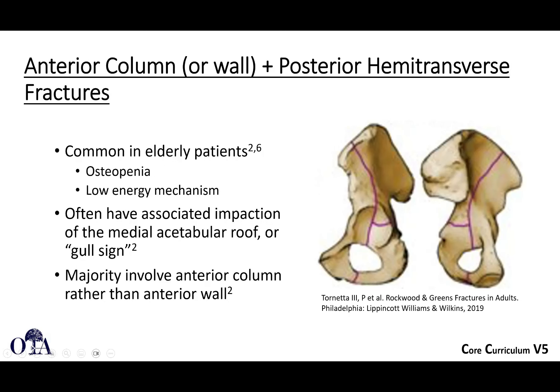Anterior column and posterior hemitransverse fractures are common in elderly patients. Frequently the anterior column fracture extends high, and then instead of a full transverse, you have the hemitransverse. So you have the anterior column with posterior hemitransverse. In most of these, the anterior column is more involved than just the anterior wall itself, and there's more displacement of the anterior column than there is of the posterior hemitransverse component.